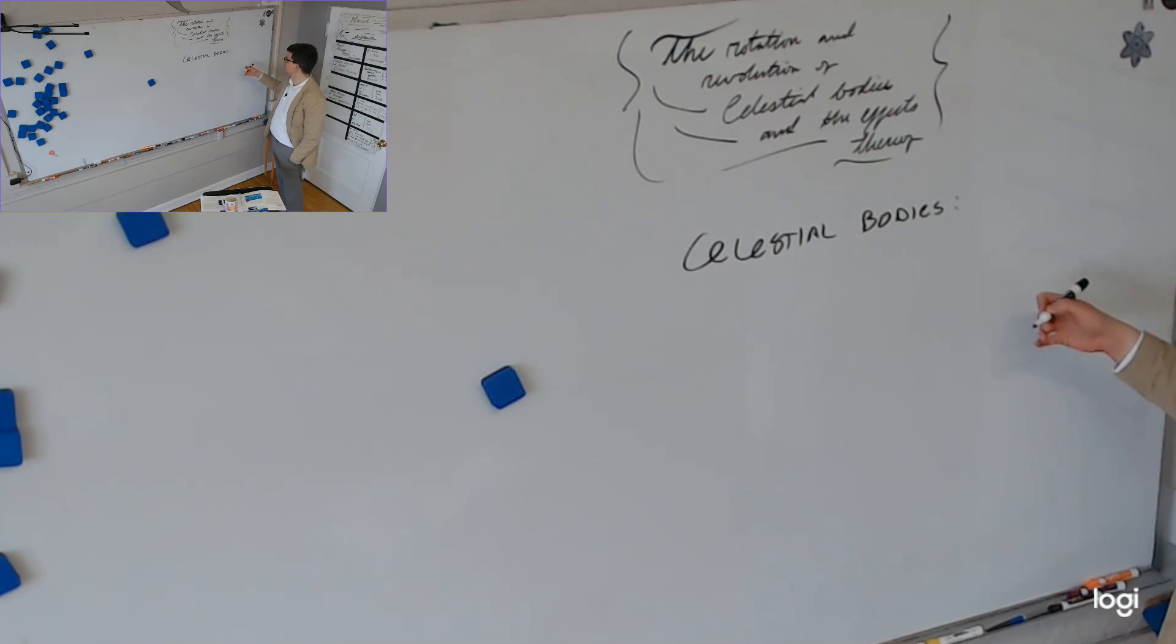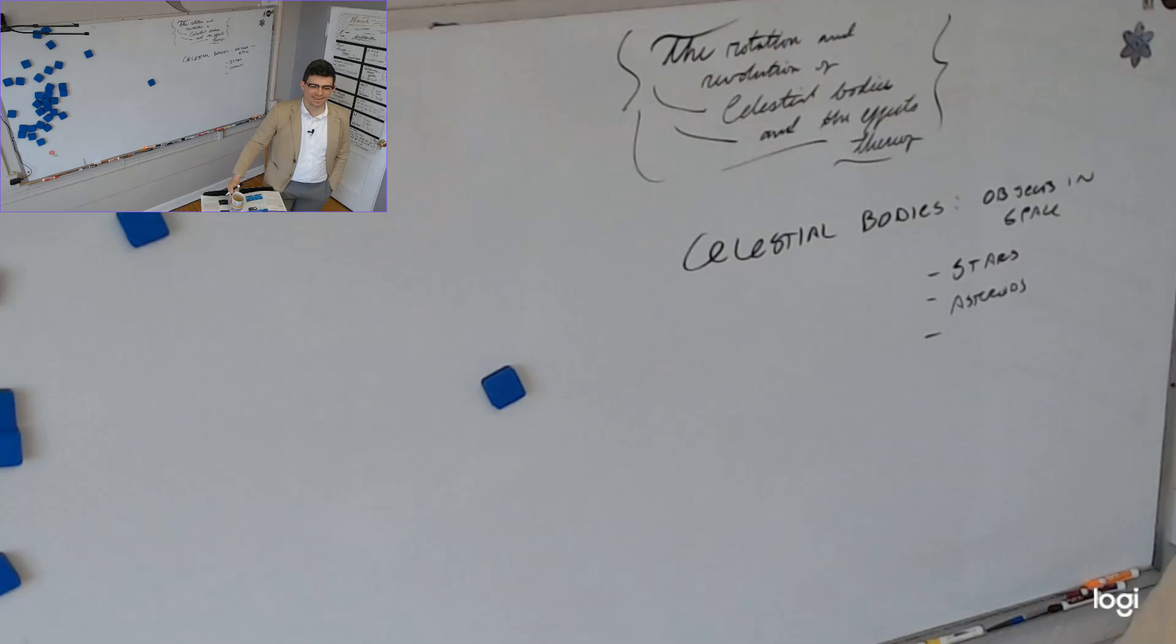Celestial bodies are objects in space. Let's get some examples. Stars. That's a great first example. What's another one? Let's not put aliens. Asteroids. Big time rush? Yep, Big time rush is a celestial body. The sun is a star, so we'll just put stars. What else?